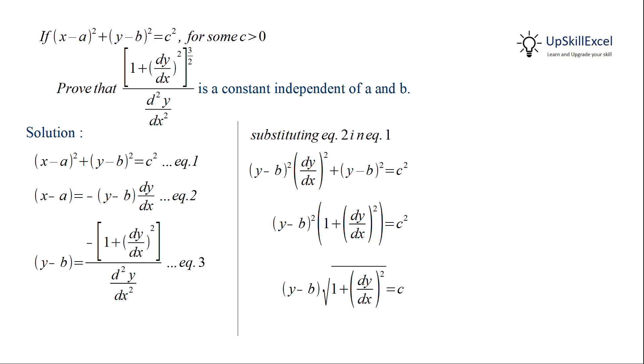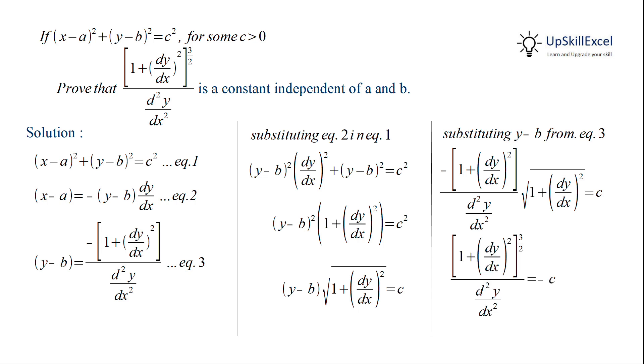Now from equation 3 we can substitute (y - b). Here the two terms in the numerator are the same: one is having a power of 1 and the other is square root. So we can aggregate it to make it a power of 3/2.